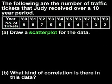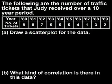A scatter plot is a graph in which the data is plotted on a coordinate grid. The horizontal axis will be the x-axis, and the vertical axis will be the y-axis.